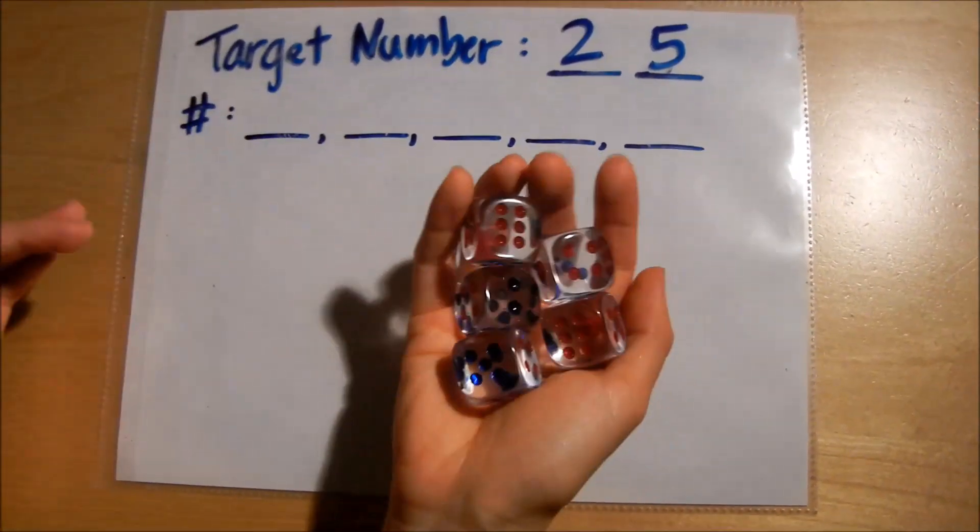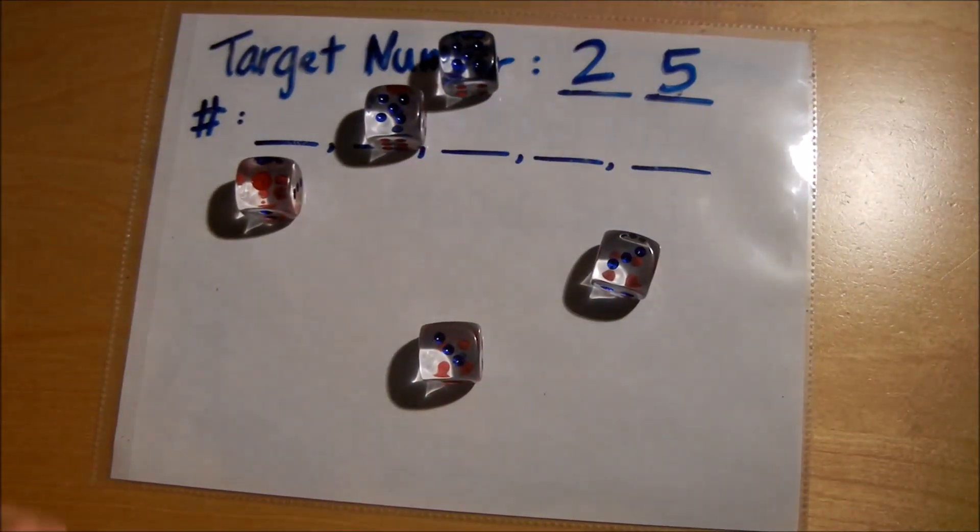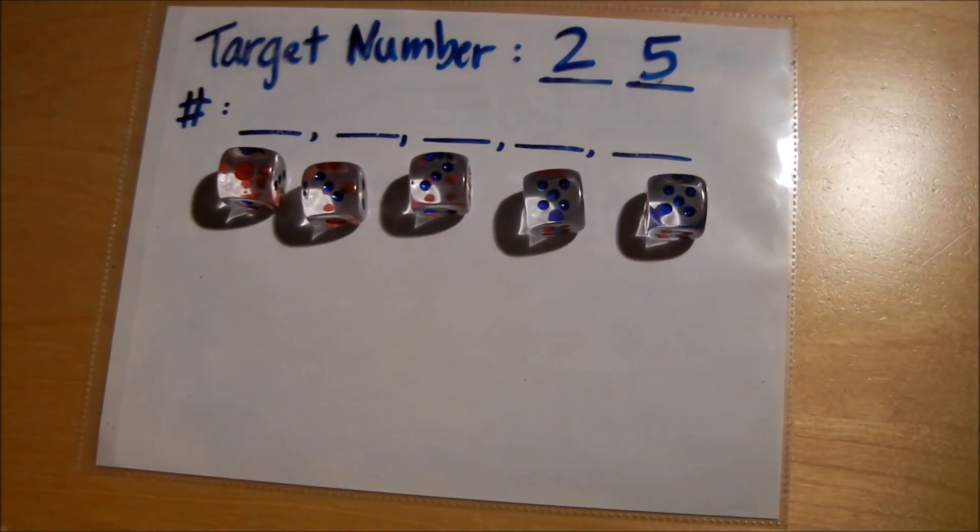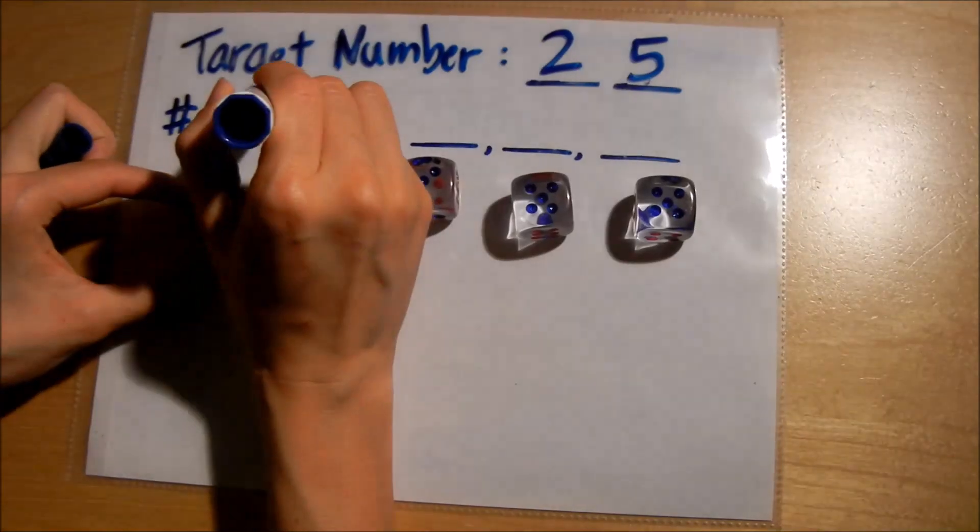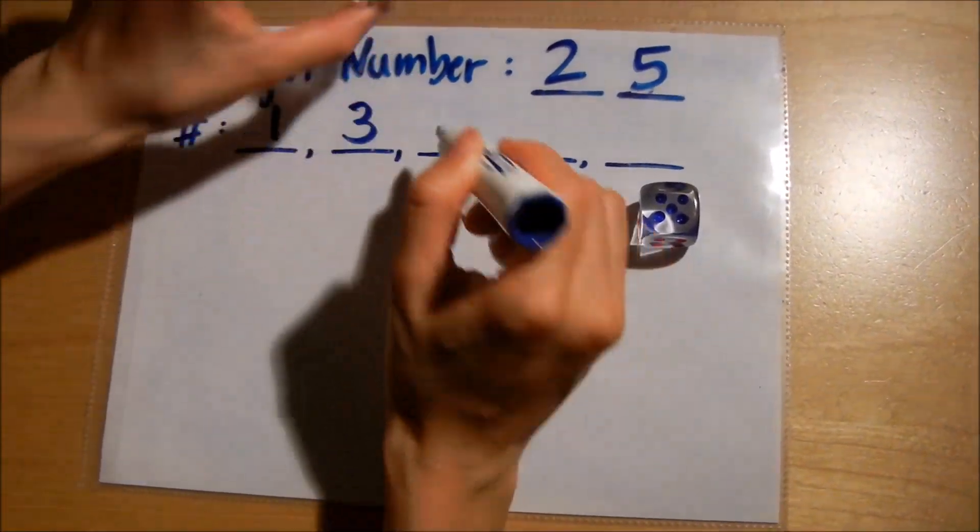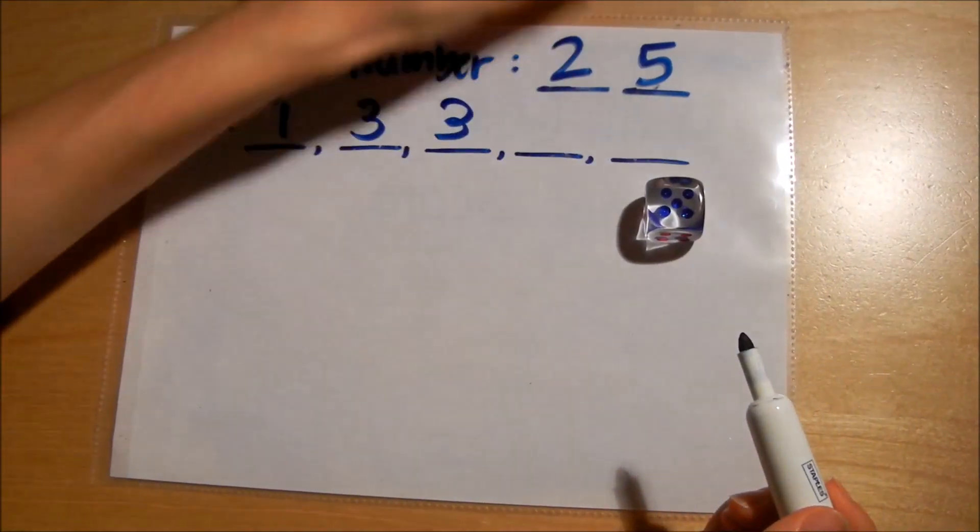I'm going to come up with my five numbers now and roll these. I know it's hard to see but I like to put my numbers in order from least to greatest. This is a one, this one is three, three, five, and five.